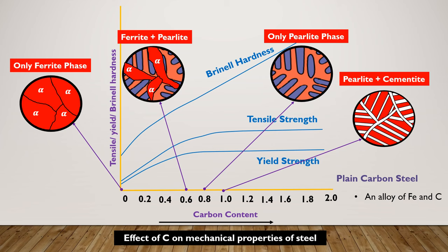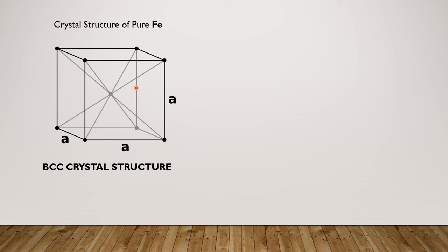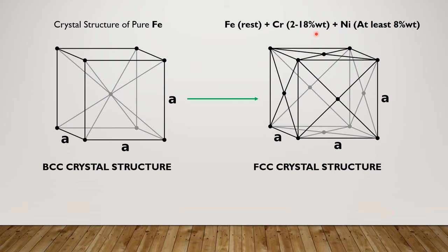The change in composition of materials can also change their crystal structure, which eventually affects the properties of materials. For example, when ferrite is solidified, its crystal structure would consist of body-centered cubic. But if we add chromium from 2 to 18 percent by weight and at least 8 percent nickel, then its crystal structure would consist of face-centered cubic, which is known as austenitic steel.